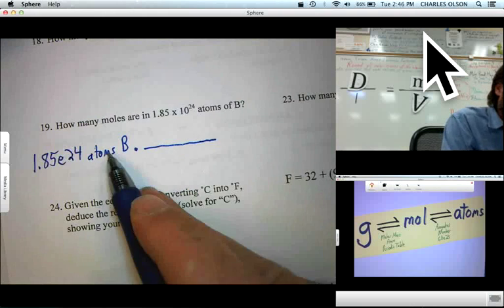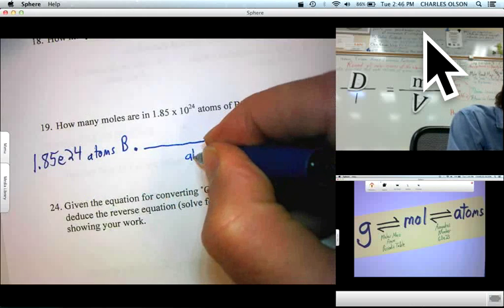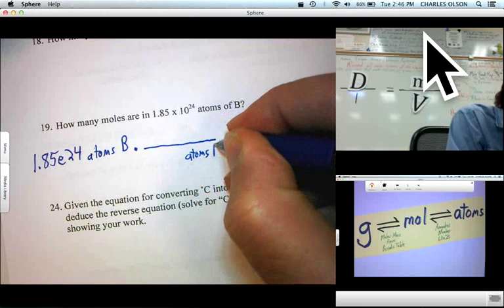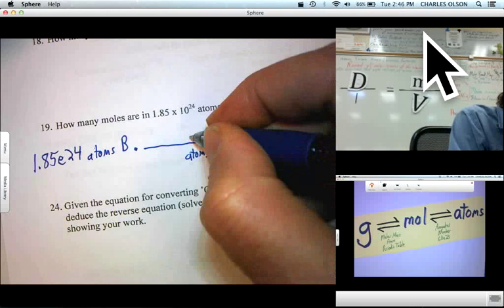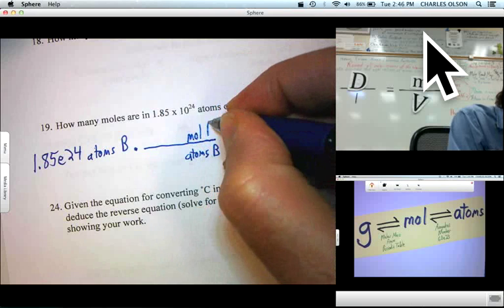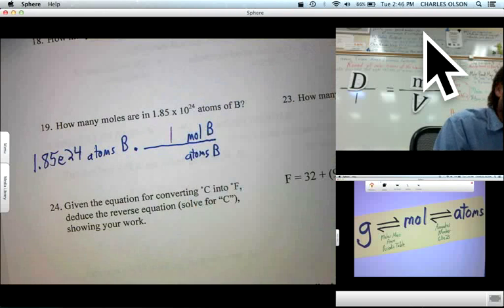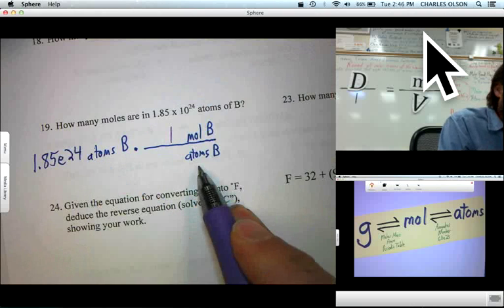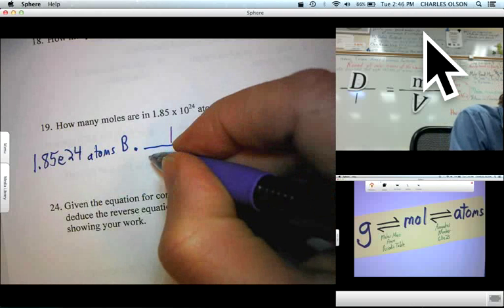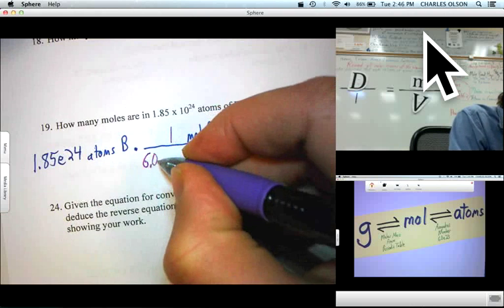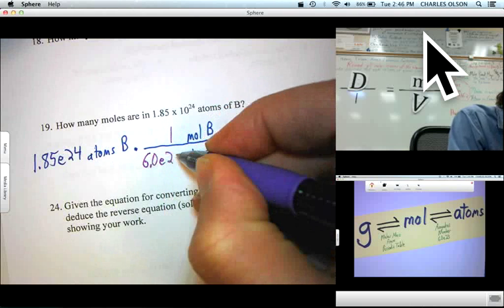Let's see. We're going to get out of atoms of boron and into moles of boron. And we know in front of moles, we always write 1. So, how many atoms? Well, I know Avogadro's number. It's 6.0 times 10 to the 23rd.